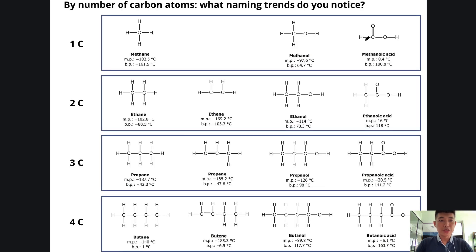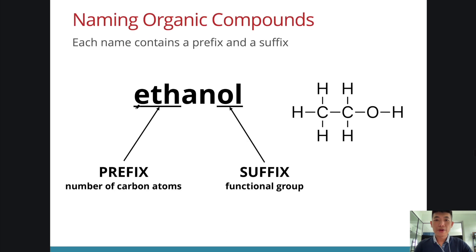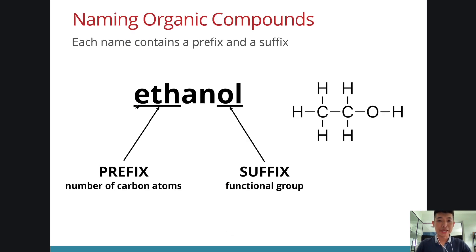The second way by which students will classify the cards will be based on the first part of the name instead. Those that start with meth-, those that start with eth-, those that start with prop-, those that start with but-. And what do you notice? It is related to the number of carbon atoms in the molecule. Those with one carbon: methane, methanol, methanoic acid. Two carbons: ethane, ethene, ethanol, ethanoic acid. So the front part of the name tells us the number of carbon atoms. You would have noticed that in the names of organic compounds, there are two parts. The prefix, the front part, and the suffix, the back part. And we join this together, we get the name, which tells us how many carbons there are and what is the functional group that is present.